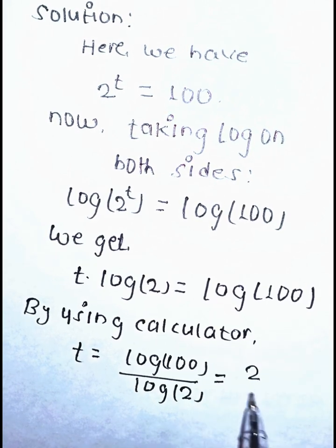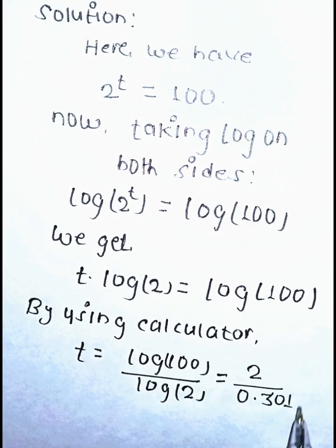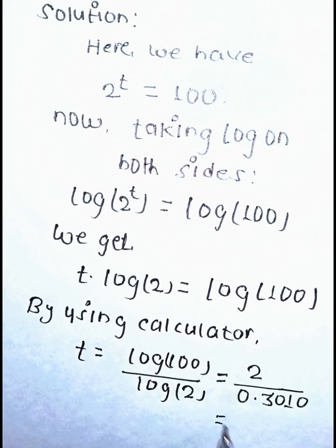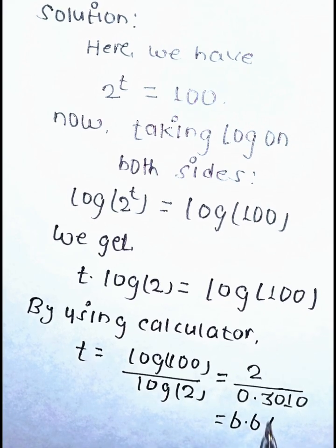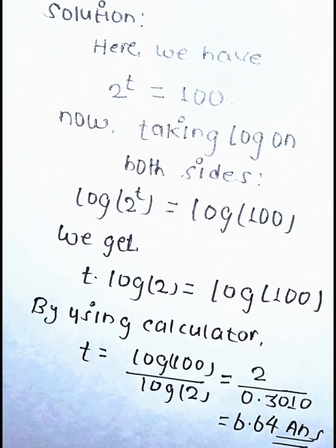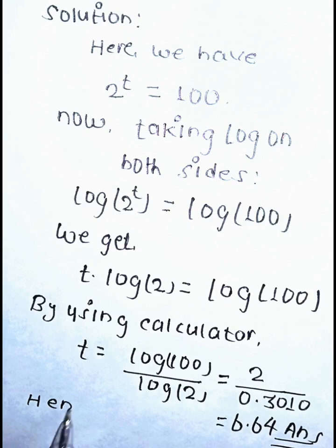The equation becomes t = 2 ÷ 0.3010, which equals 6.64. This is the value of t.